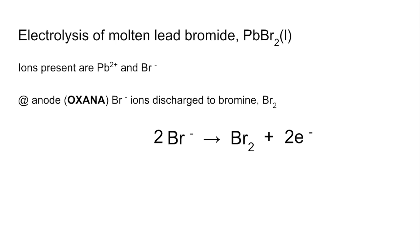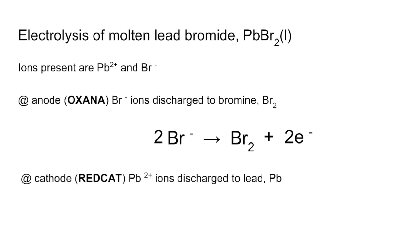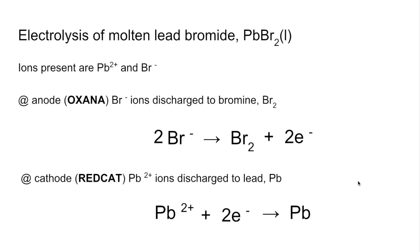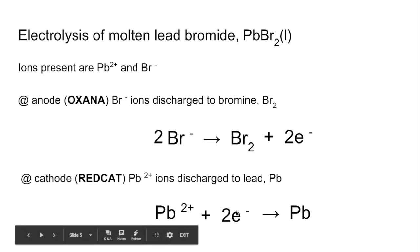At the cathode — the negatively charged electrode — Red Cat tells us reduction is going to take place. The positive Pb2+ ions are attracted to the cathode and discharged, becoming lead Pb. For the half equation we go from Pb2+ to Pb; the atoms balance already with one lead on each side, but the charges don't. We've got 2 plus on the left and no charge on the right, so we add 2 electrons before the arrow — this is a reduction process, so electrons are gained.